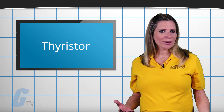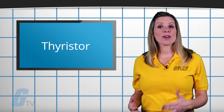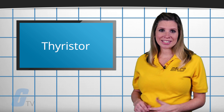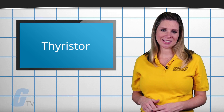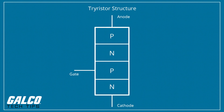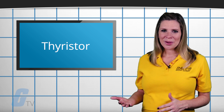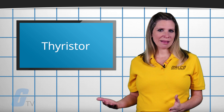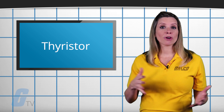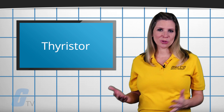Thyristors are primarily designed to amplify and rectify the electrical currents that flow in high-powered electronic devices. A thyristor's four layers consist of a series of N and P-type material that connect with the anode, cathode, and a logic gate. When a current is applied at the gate, the thyristor allows an amplified current to flow from anode to cathode.